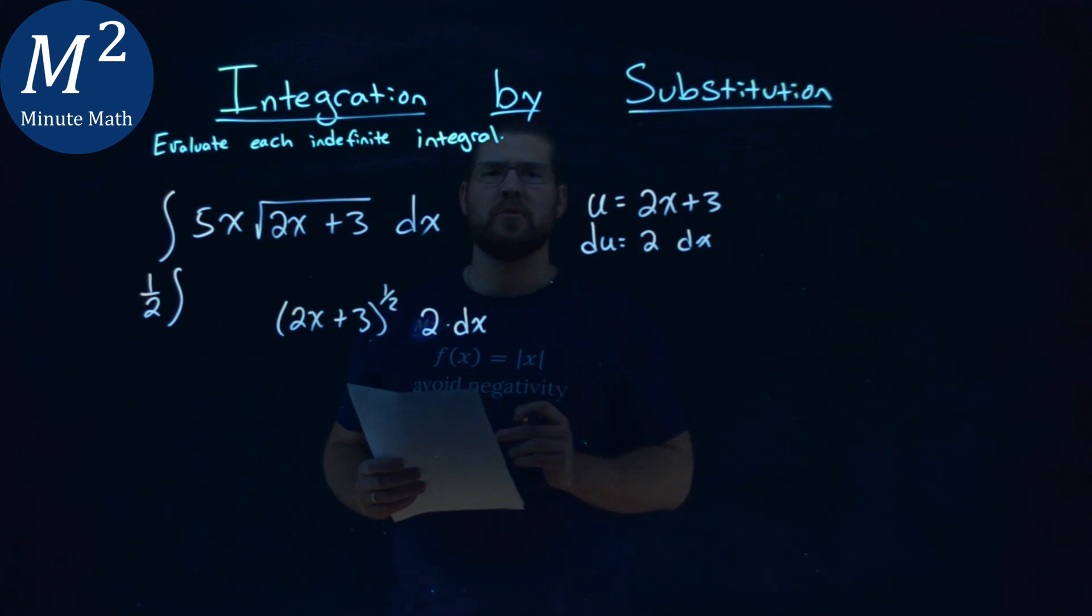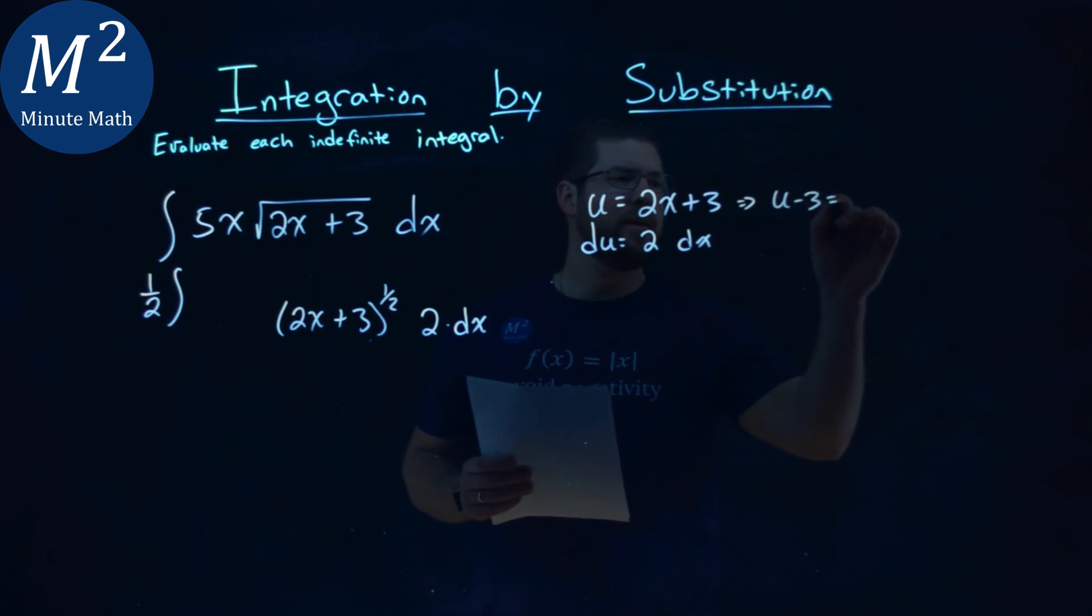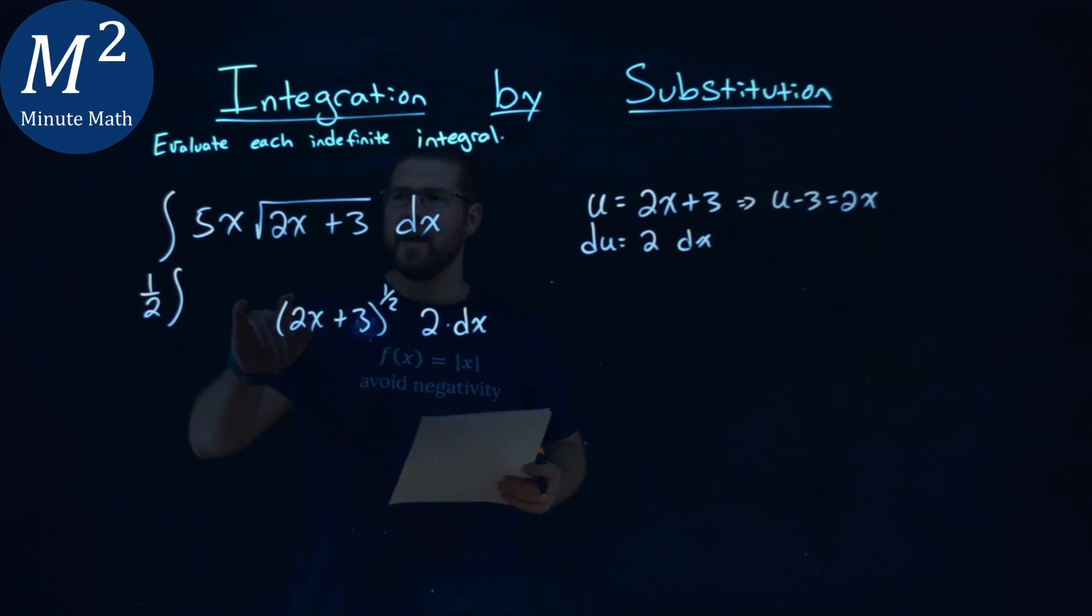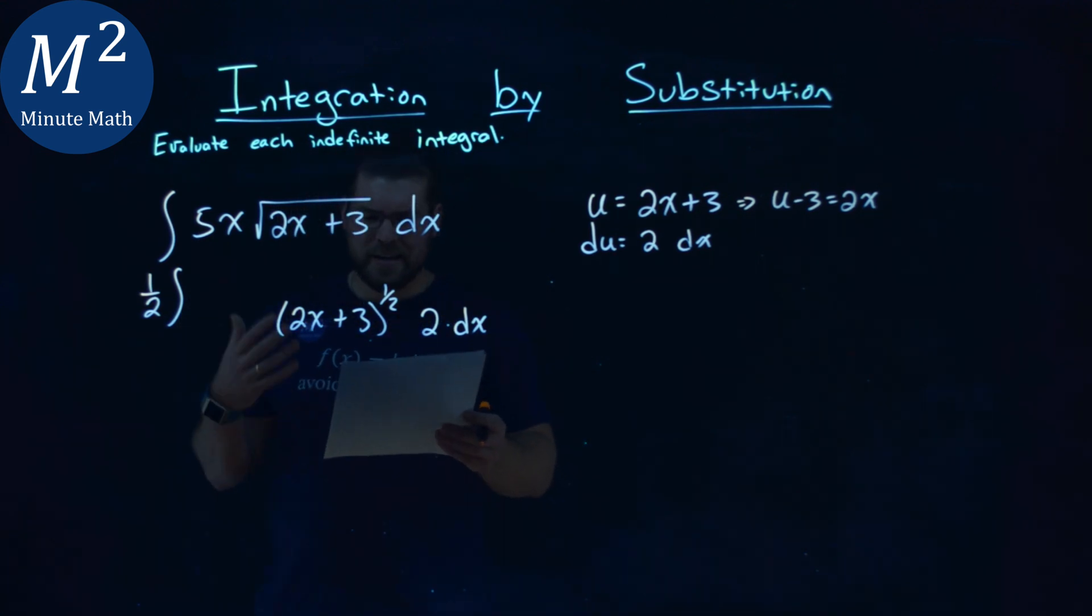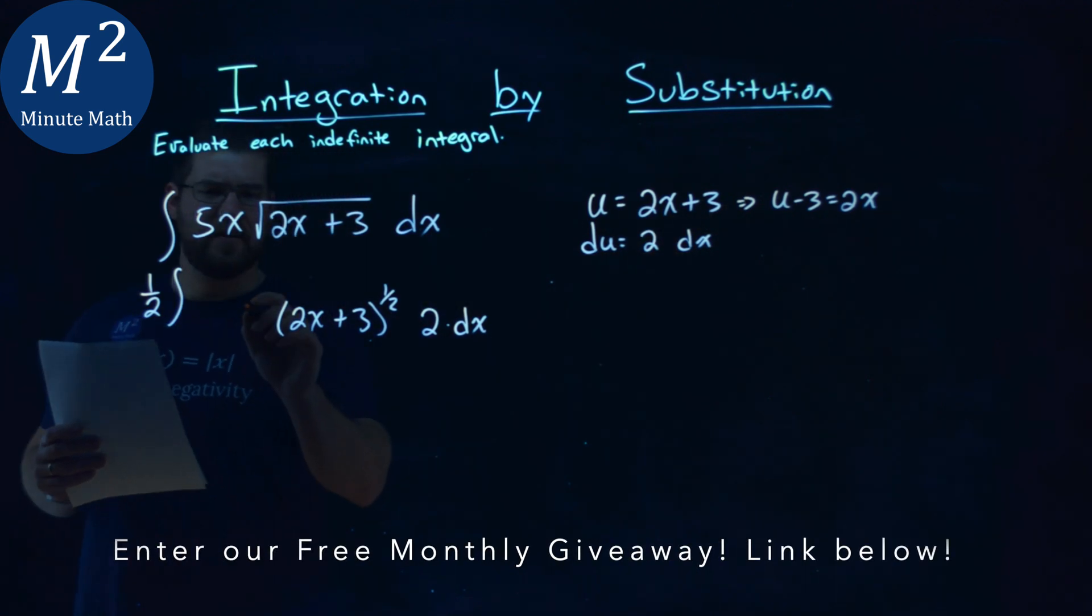Well, that actually comes into my u value. If I rewrite my u value to subtract a 3 to both sides, I have a u minus a 3 equals a 2x right there. So I want to have this actually turn into a 2x. Well, how can I do that? The x is there. I have the x.